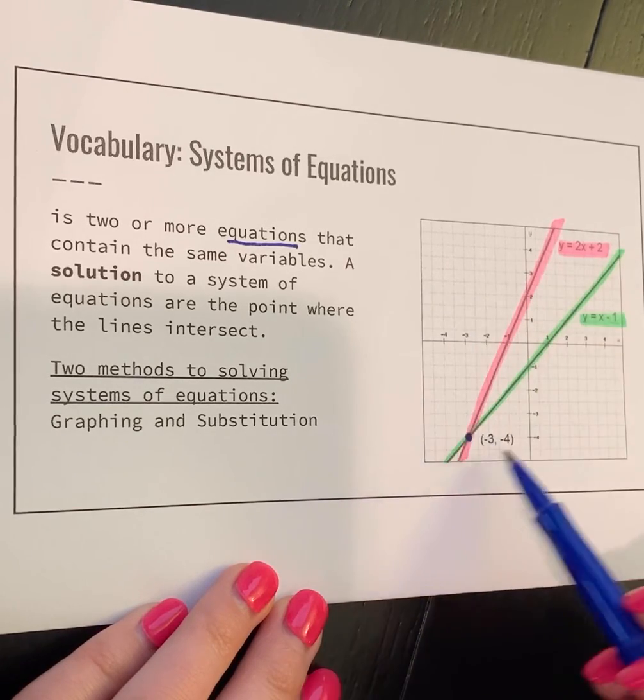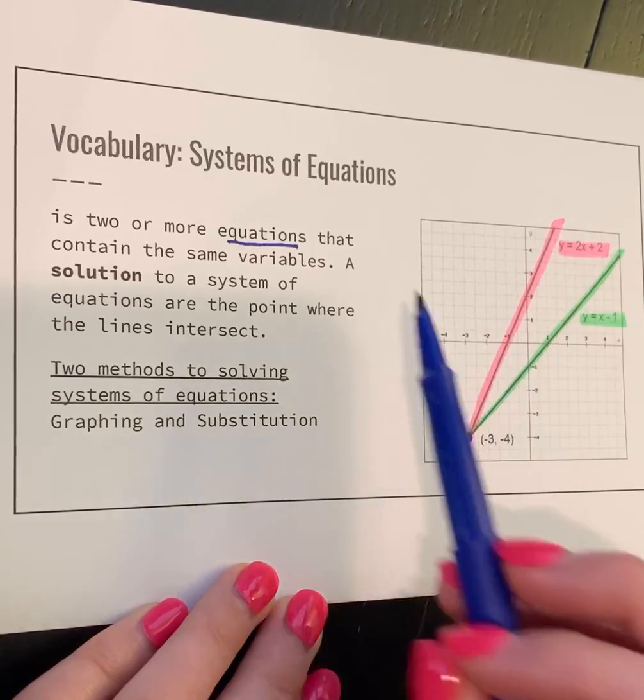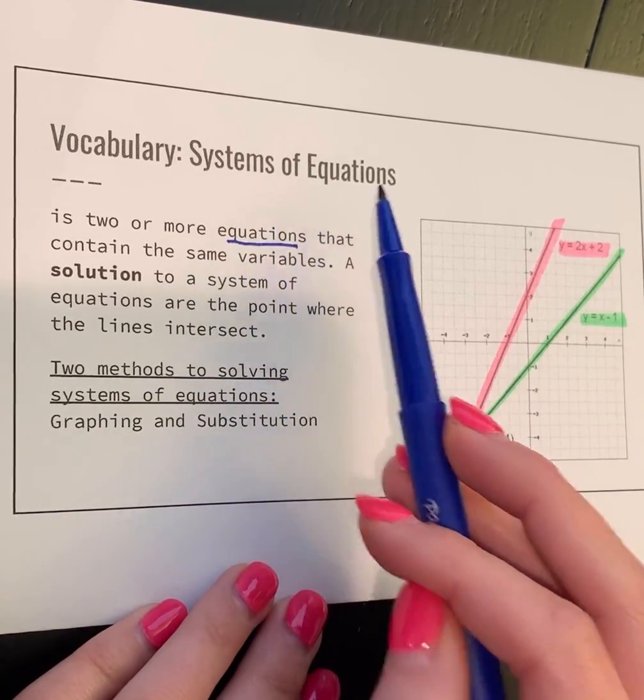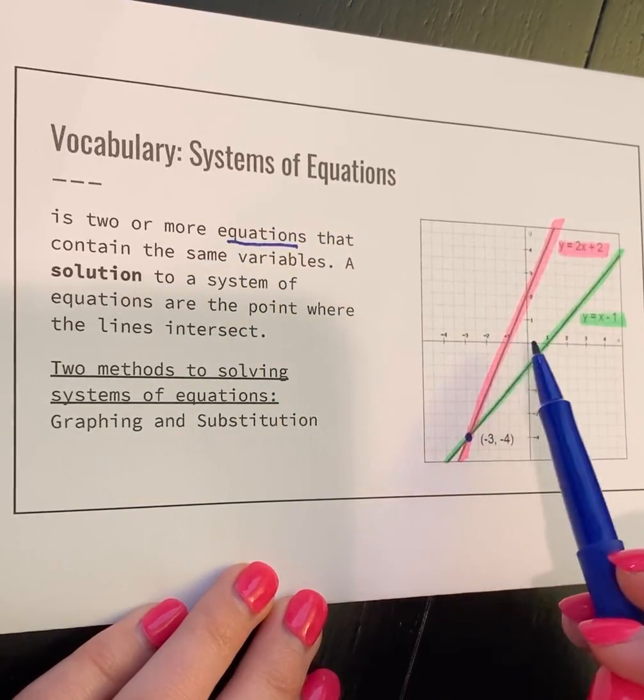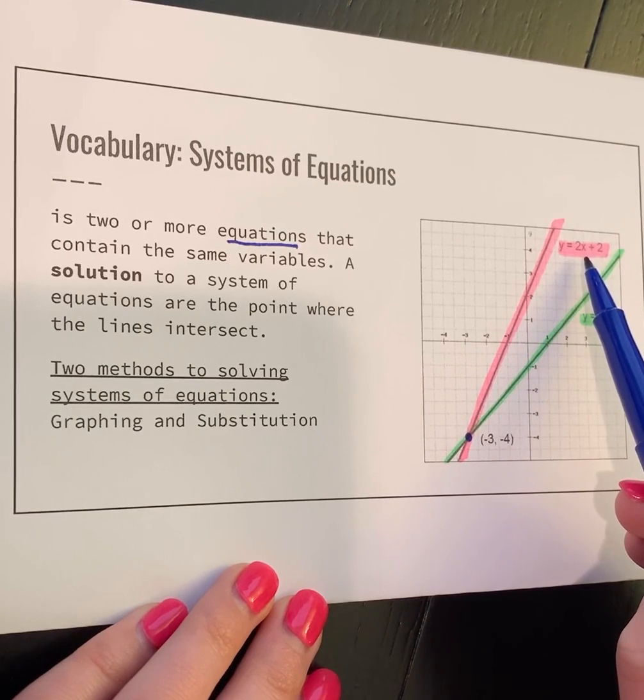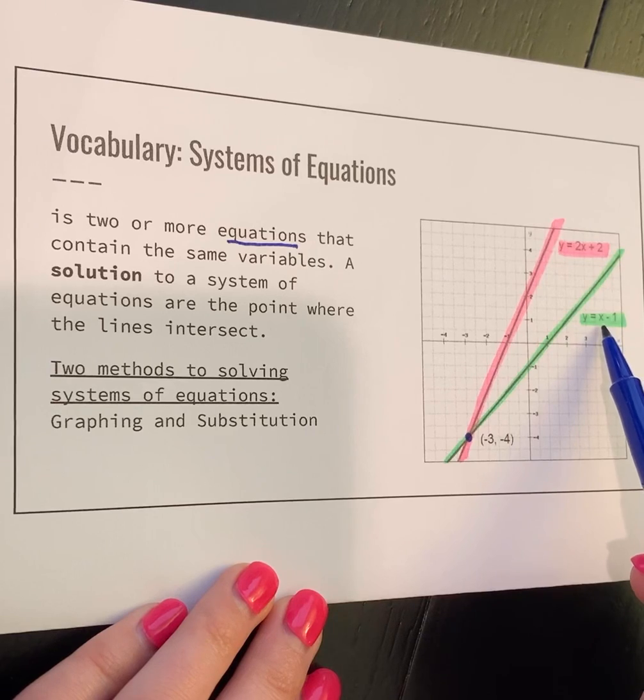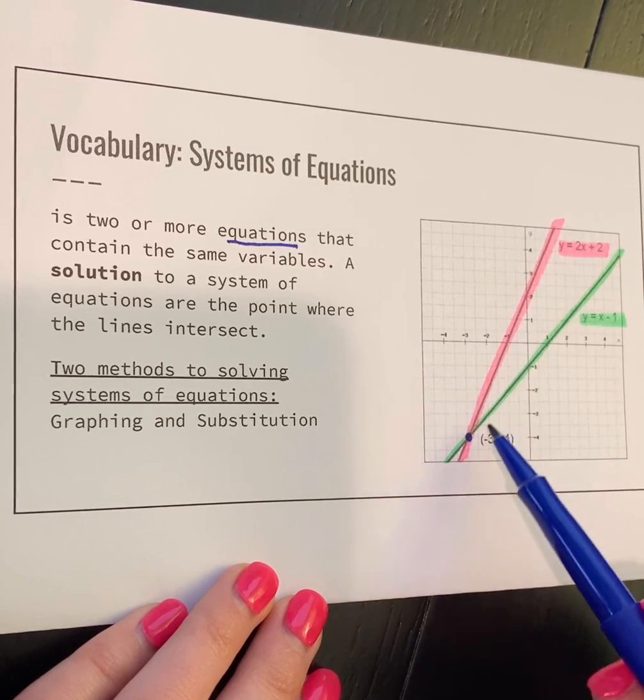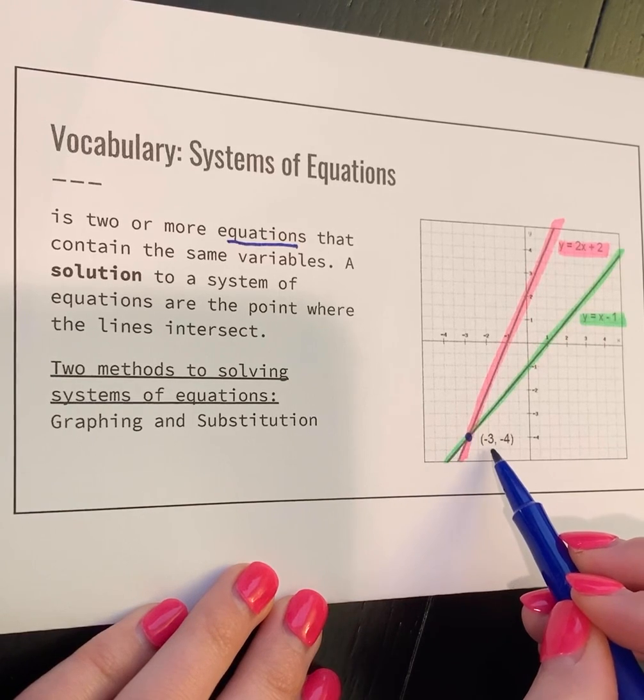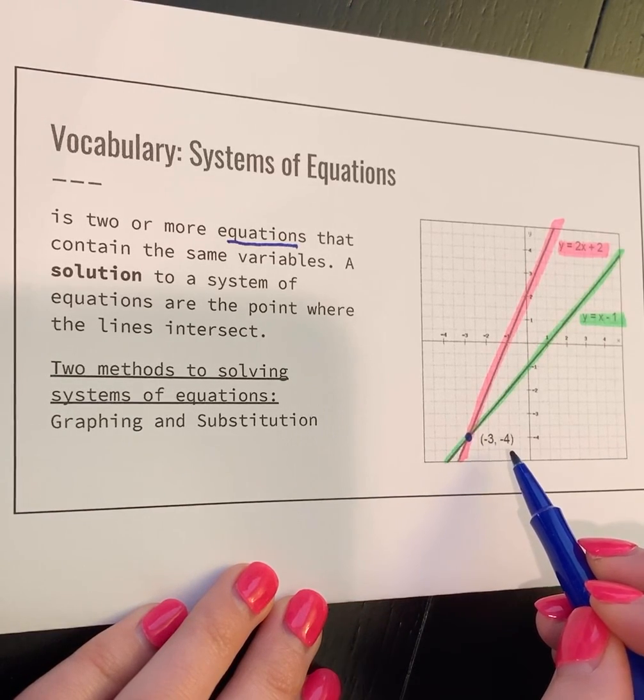If you look at my graph over here, I have two equations, so that means I have a system of equations. The pink one which is 2x plus 2, and the green one which is x minus 1. Notice that after I graph them, they cross at the point (-3, -4).